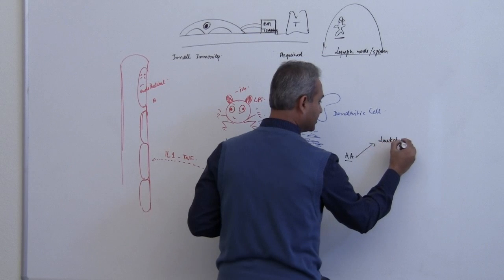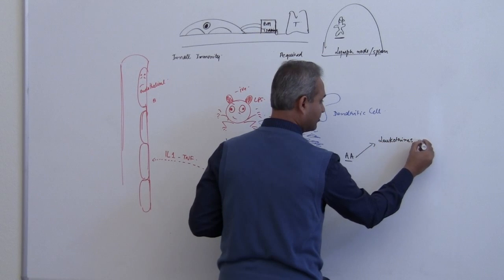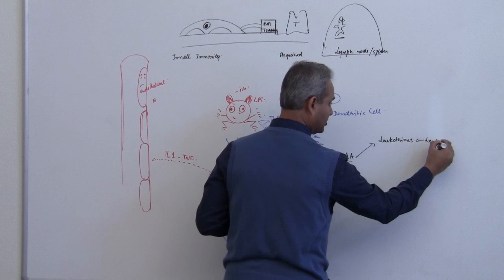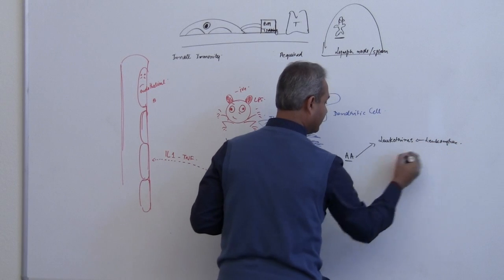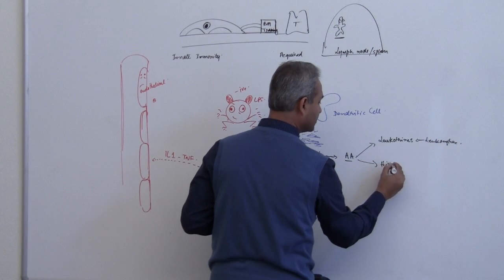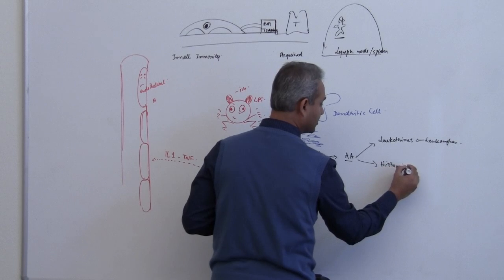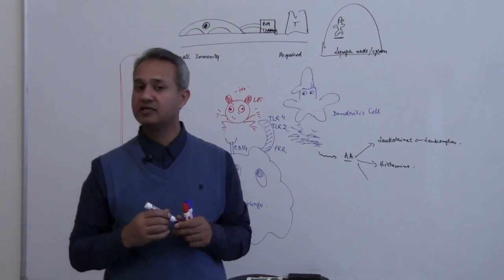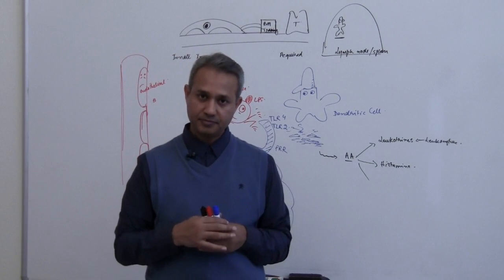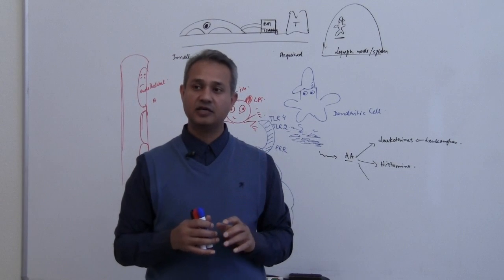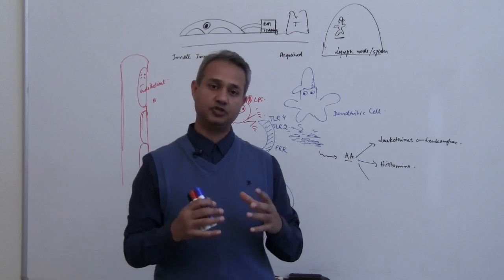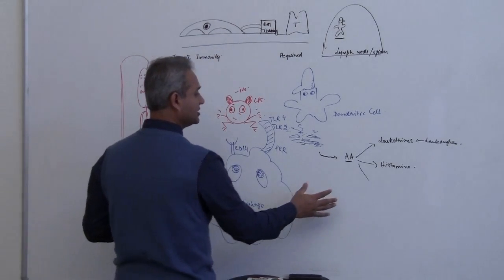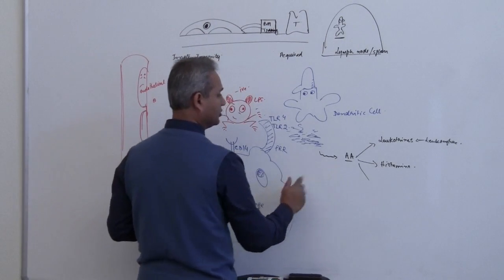Leukotrienes normally come from the leukocytes as well. We have histamine, we have thrombin and so on. So we have chemical substances which are released from dead tissue. These substances are present here as well.